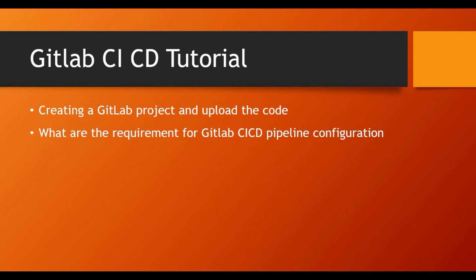Now let's talk about the GitLab tutorial. We'll be creating a GitLab project, uploading some sample code, and looking at some settings and requirements for a GitLab CI/CD pipeline configuration. This will be a preparation phase — a step-by-step tutorial. You'll understand what a GitLab project is, what the settings are, what a GitLab Runner is, and what file needs to be created for CI/CD to be configured.